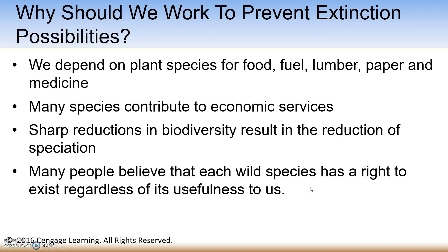So why should we work to prevent extinction? We depend on different plant species for food, fuel, lumber, paper, and medicine, and many species contribute to economic services as well. A sharp reduction in biodiversity causes a reduction in speciation and can impact the stability of an ecosystem and the food web upon which that ecosystem is based. Many people also believe that each wild species has an inherent right to exist regardless of whether it's useful to us or not.